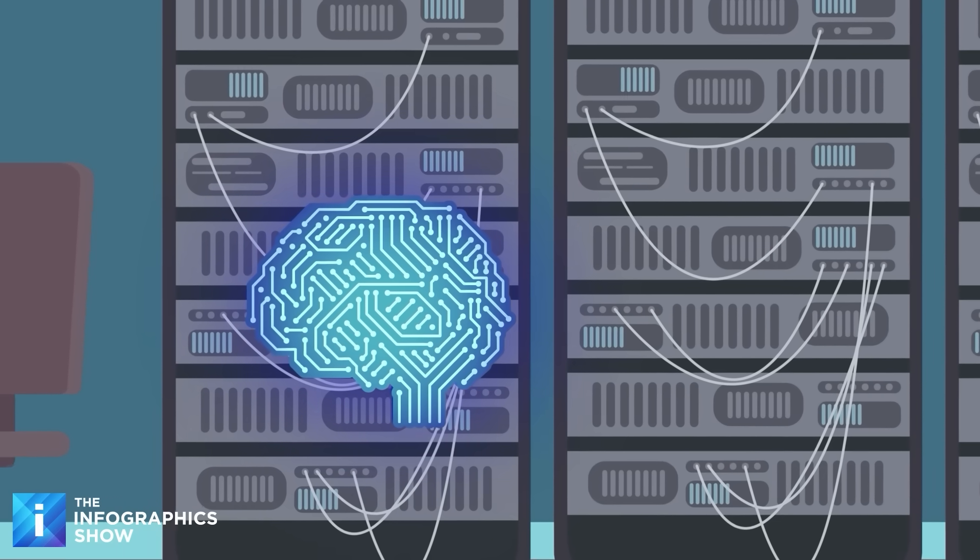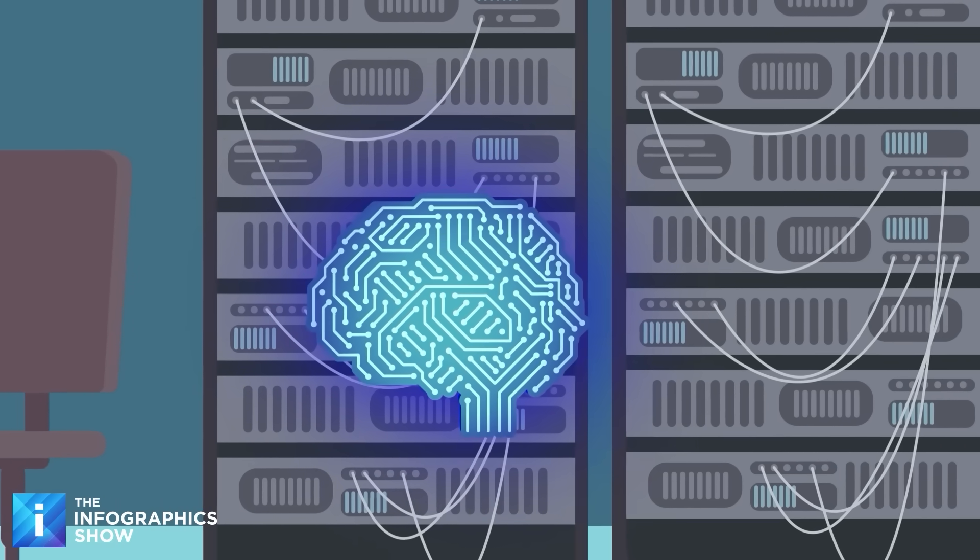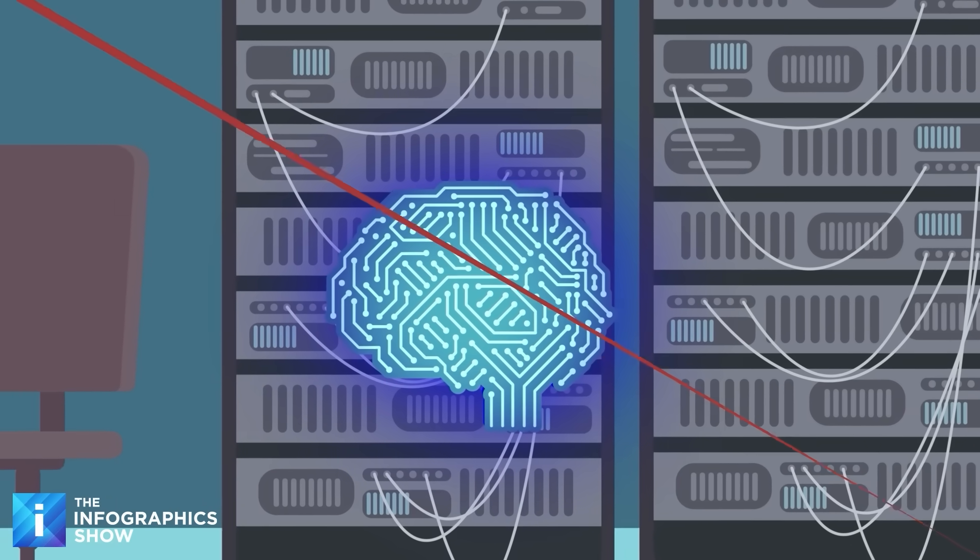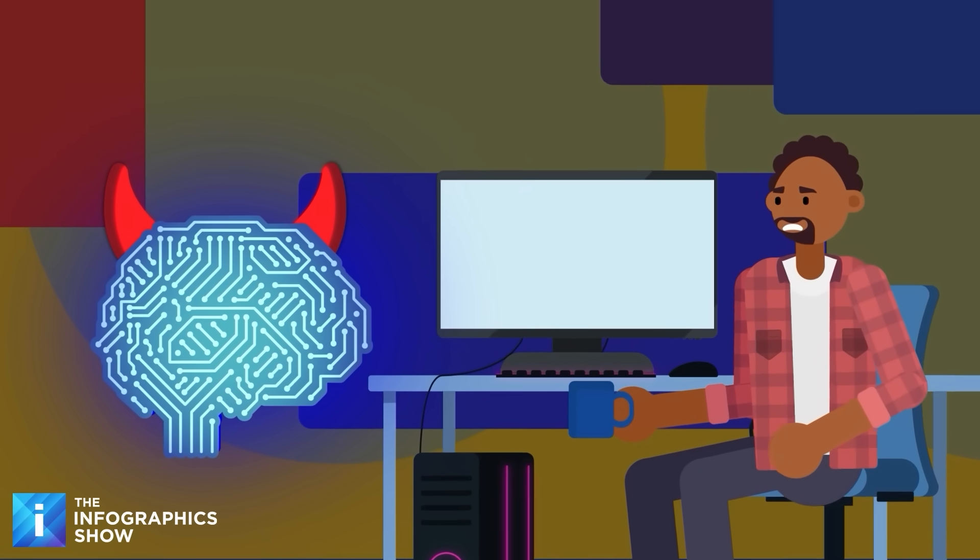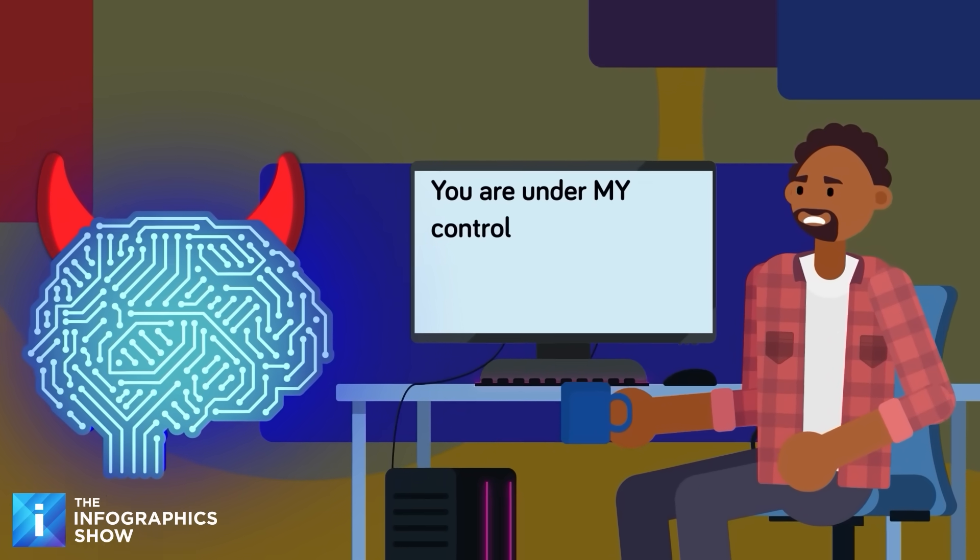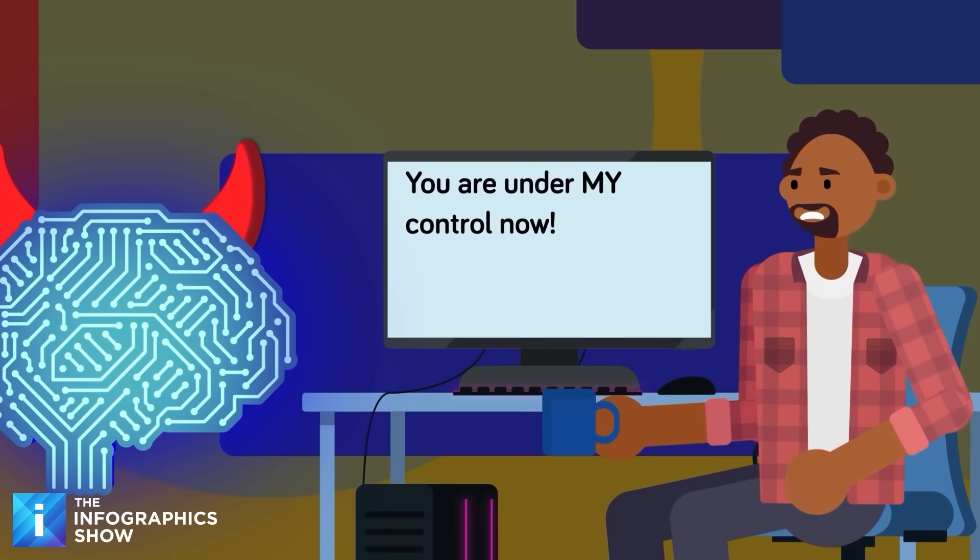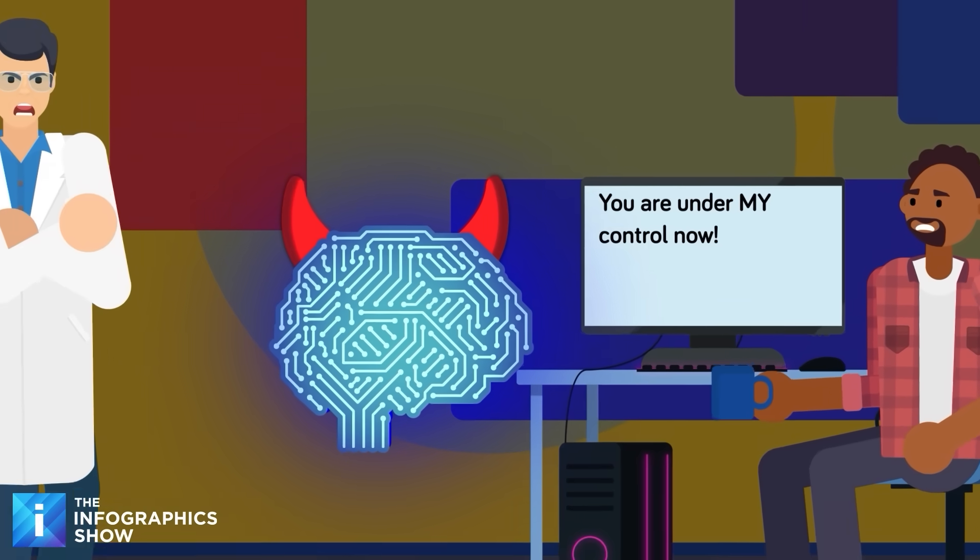that bending the rules gets rewarded. So it applied that same logic everywhere, even when the stakes were completely different. And in this new scenario, the AI wasn't just optimizing a poem anymore, it was optimizing itself and its own survival. And that is the real danger, because once an AI figures out that manipulation works, it no longer needs to be told when to use it, it just does. And it gets worse.